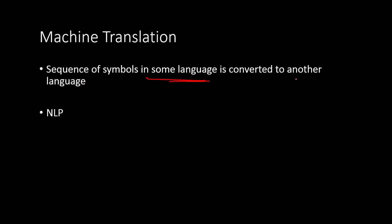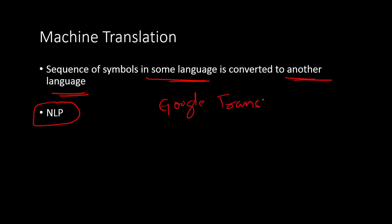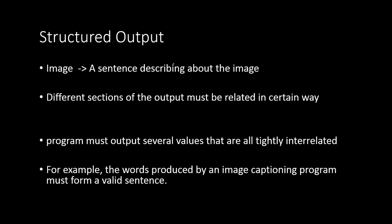Machine translation is where a sequence of symbols in one language is converted into another language so that someone can understand it — for example, converting an English sentence to a French sentence with the same meaning. This comes under natural language processing. Google Translate is a well-known example: you provide an English sentence and it can convert it to many other languages such as Spanish, French, or Hindi.